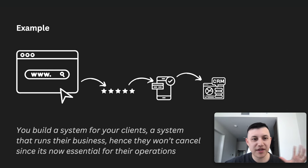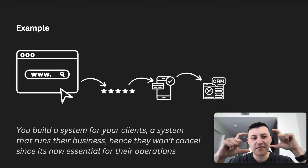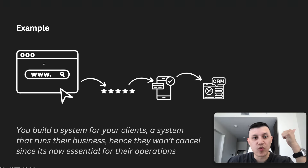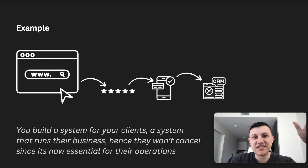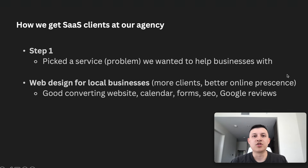We're building a system that runs the client's business, so they won't cancel because that system is now essential to their operations. For example, take a landscaping company — you build their website, set up Google review automations through Go High Level, and teach them how to collect payments, track customers, and use their CRM all in one system. Their whole website runs from your white-label SaaS, so they really can't cancel unless they want to shut down their business.